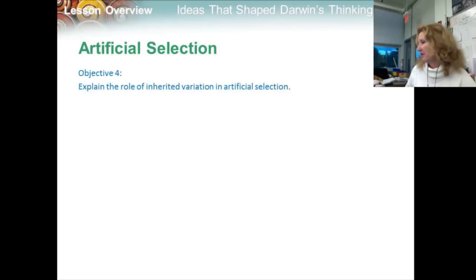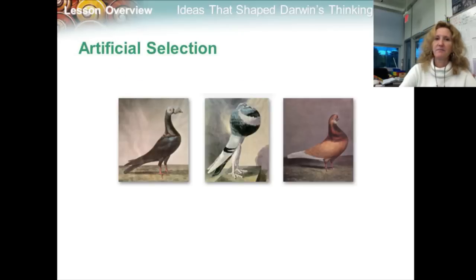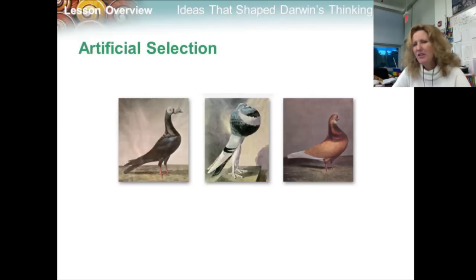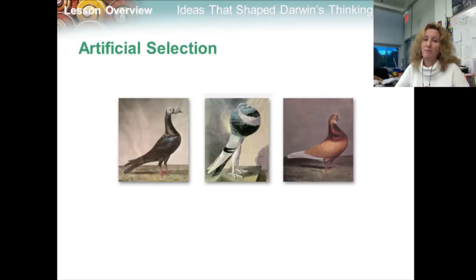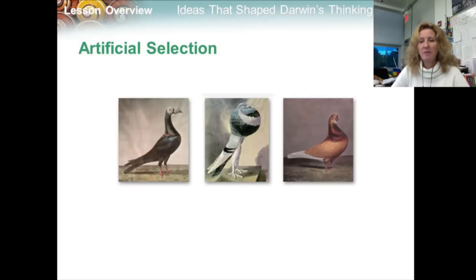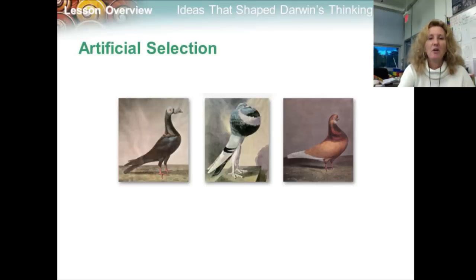Objective four: explain the role of inherited variation in artificial selection. To find an explanation for change in nature, Darwin studied change produced by plant and animal breeders. Breeders knew that individual organisms vary, and that some of these variations could be passed from parents to offspring and used to improve crops and livestock. For example, farmers would select for breeding only trees that produce the largest fruit, or cows that produce the most milk. Over time, selective breeding produced trees with even bigger fruits and cows with even more milk. Darwin called this process artificial selection — a process in which nature provides the variations, and humans select those they find useful. Darwin put artificial selection to the test by raising and breeding plants and fancy pigeon varieties.